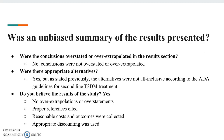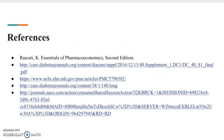Regarding bias and the results presented: were the conclusions overstated or overextrapolated? No — we did not think the conclusions were overstated or overextrapolated. Were there appropriate alternatives? Yes, but as discussed earlier, the alternatives were not all-inclusive according to ADA guidelines for second-line type 2 diabetes treatment. Did we believe the results of the study? Yes. There were no overextrapolations or overstatements, proper references were cited, reasonable costs and outcomes were collected, and appropriate discounting was used.